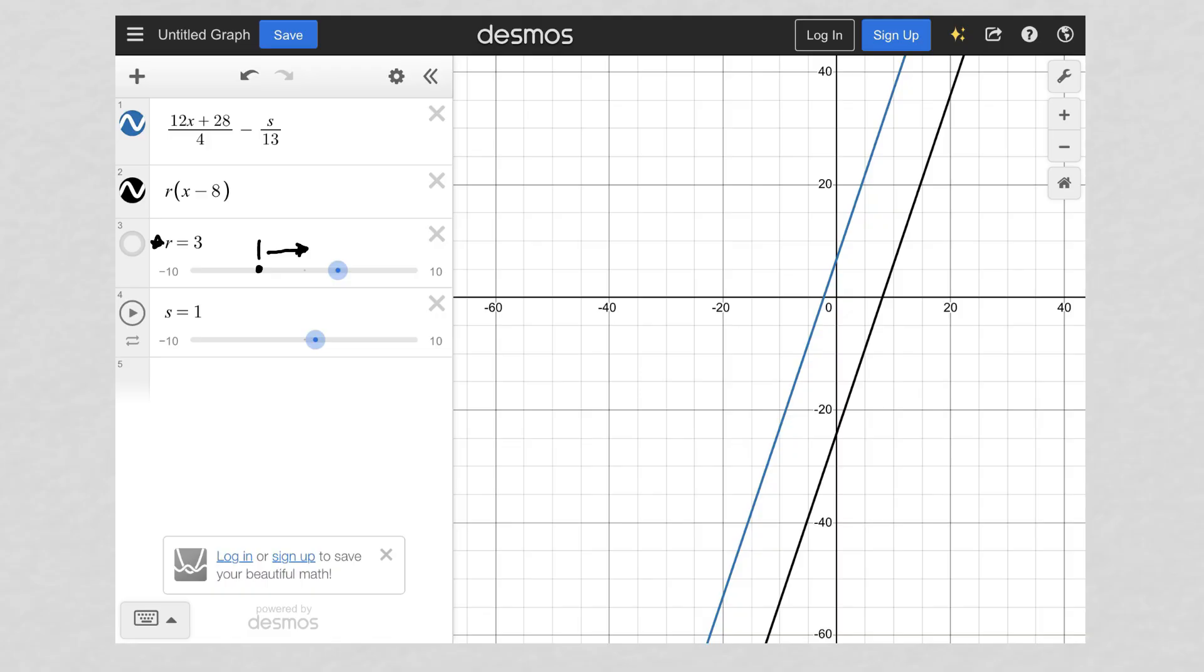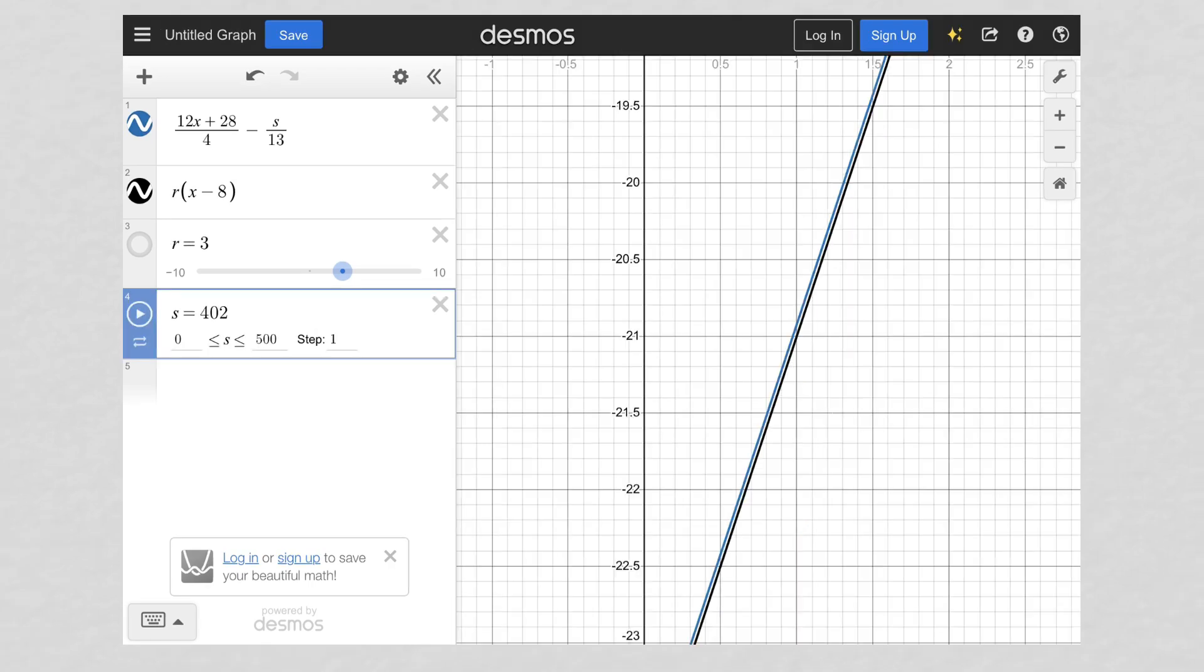Once I got that, I locked in my R value. Next is to focus on the S value. So my S value, I was told is greater than zero. So that's where I just adjusted my range here for S values being greater than zero.